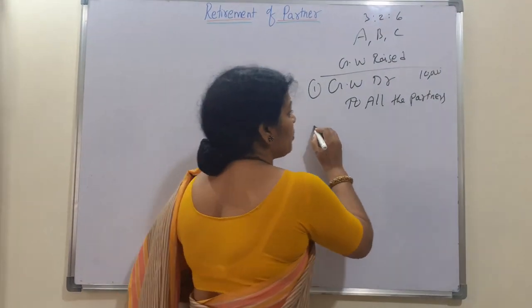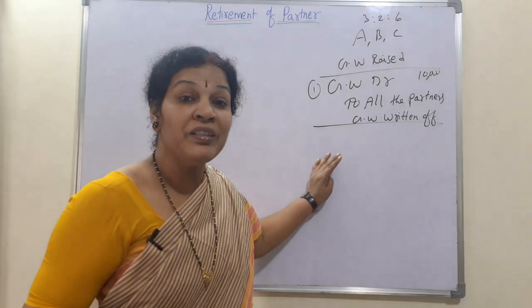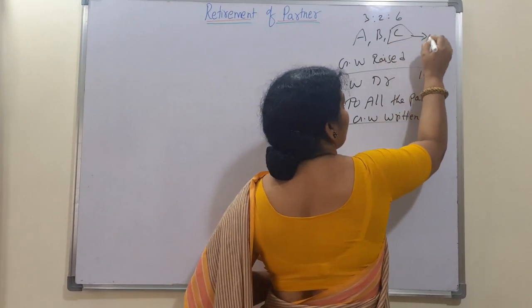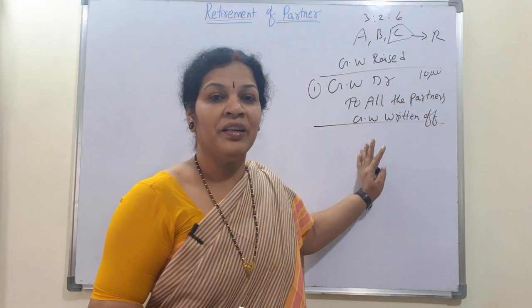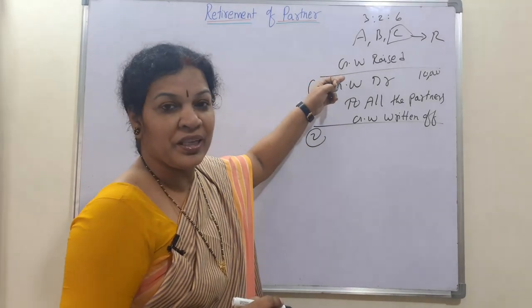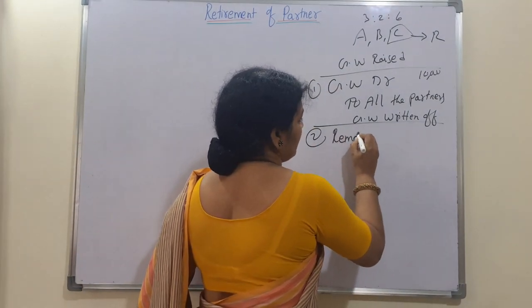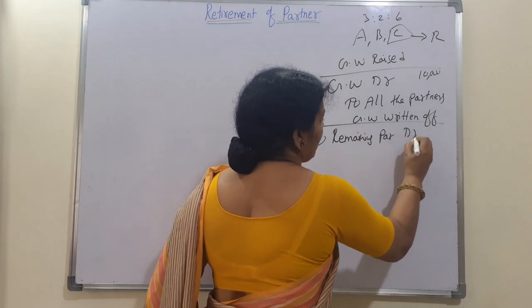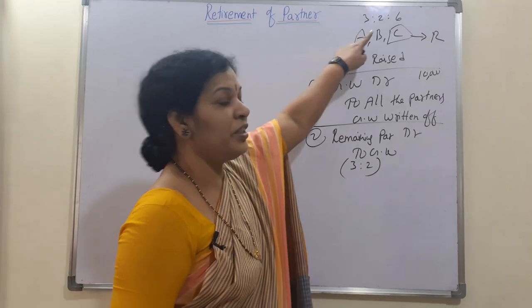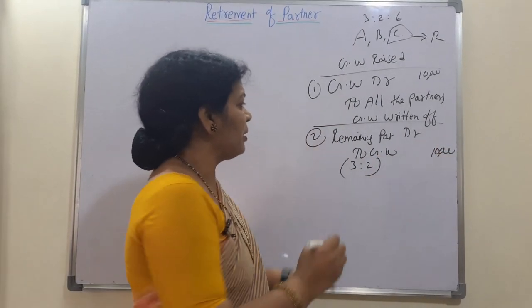The second thing to remember is when goodwill is written off. When writing off, we do not include the retiring partner. Here C is the retiring partner, so we leave C and write off only the remaining partners A and B. The write-off goes to the debit side, and goodwill is credited. Remaining partners A and B bear it in the ratio of 3:2. The total of 10,000 is distributed to A and B in that ratio.